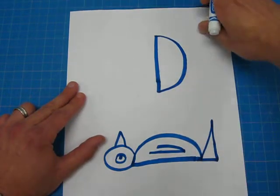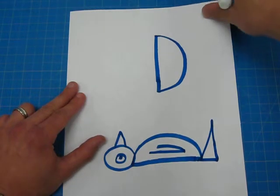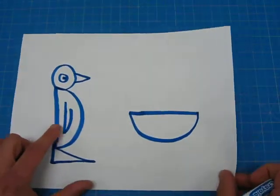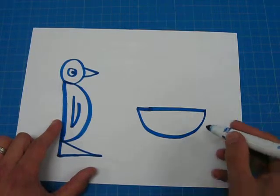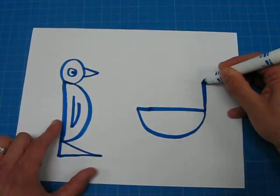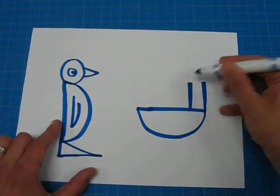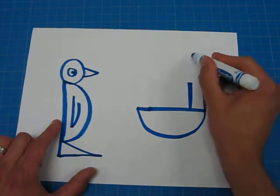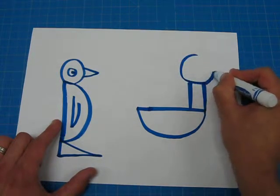And this is going to be a pigeon from Don't Let the Pigeon Drive the Bus. This is his body. I'm going to make two lines going up. And a big letter O for his head.